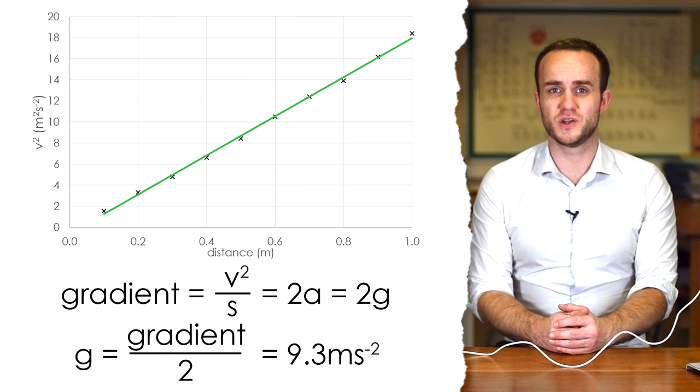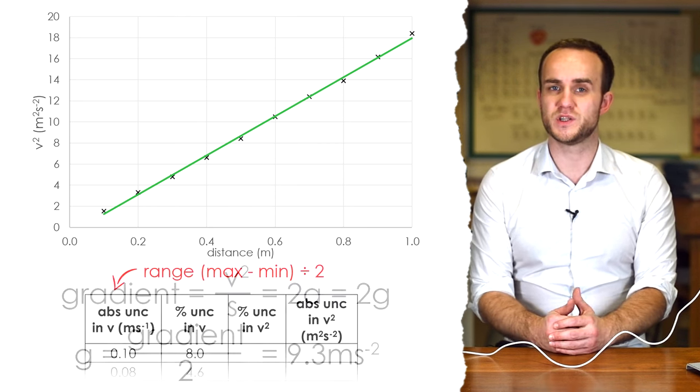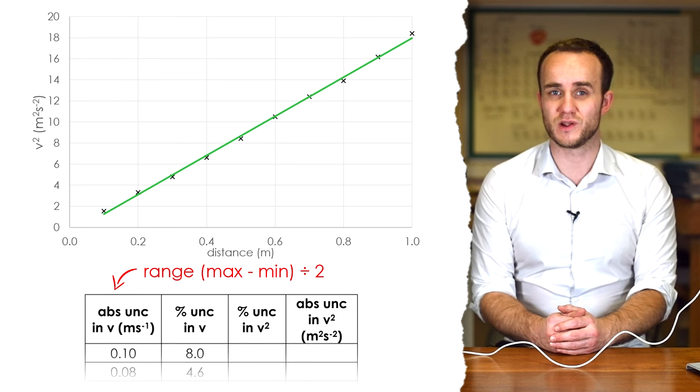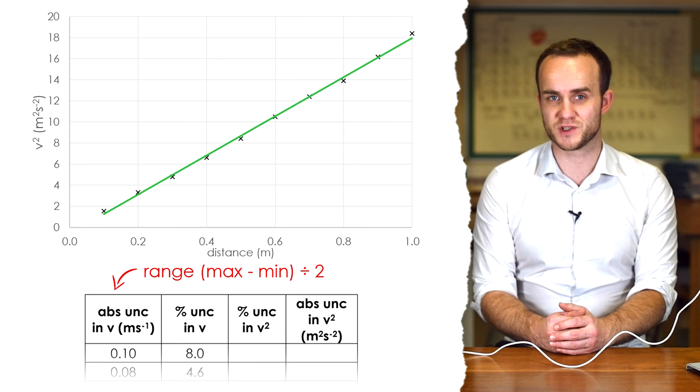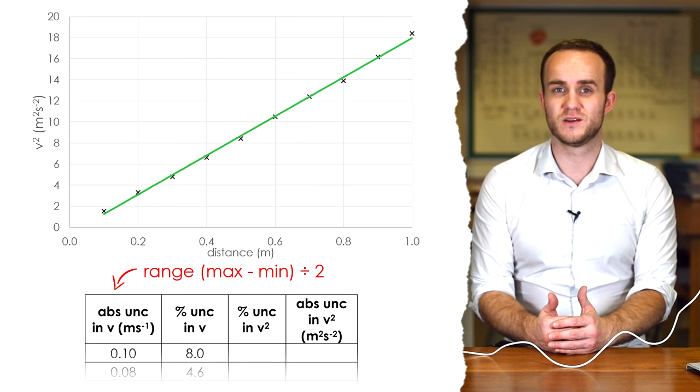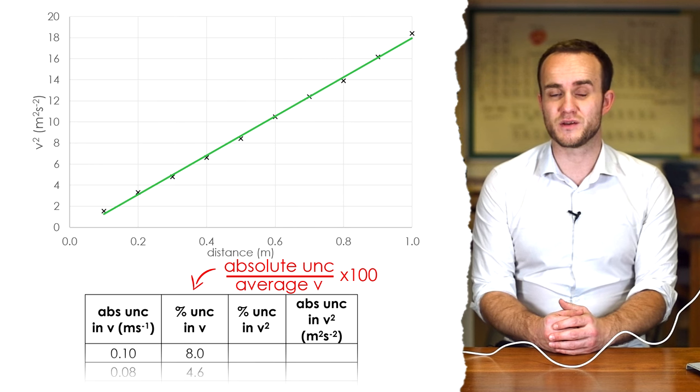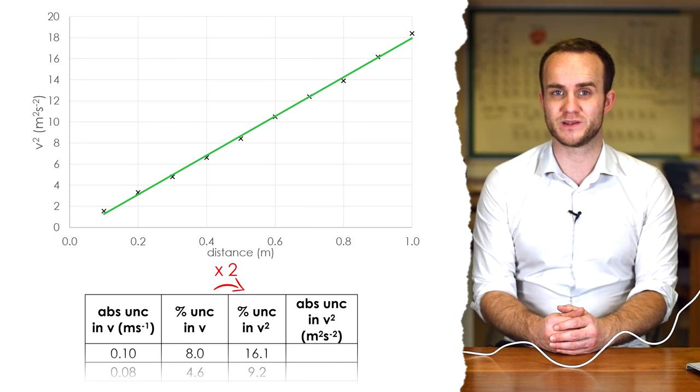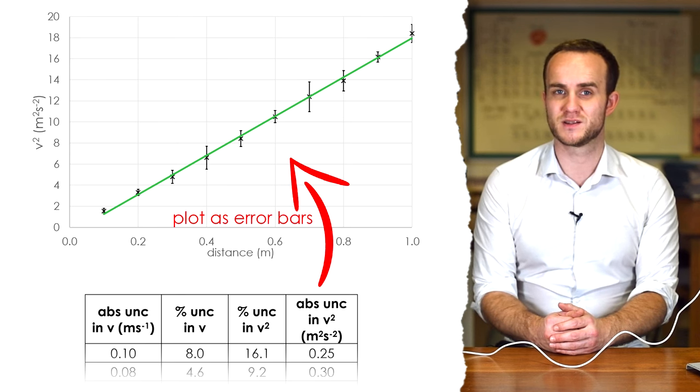This experiment is a good opportunity to flex your muscles regarding uncertainties. What you should do is find the range of your velocities for each distance and then half that. That's going to be your uncertainty in your average speed. But because we're going to V² we therefore have to find the percentage uncertainty in each average speed. To then go to V² we double this percentage uncertainty and then we can turn that back into an absolute uncertainty, plot that on our graph as error bars, then find a line of worst fit.